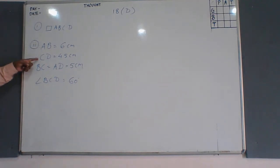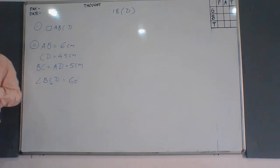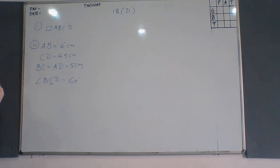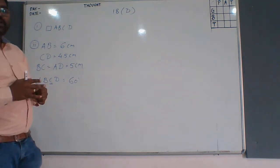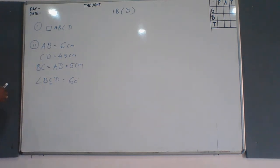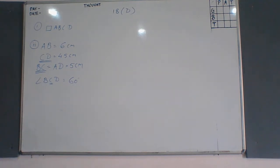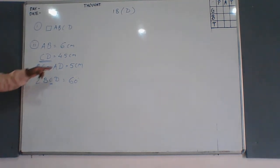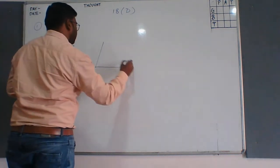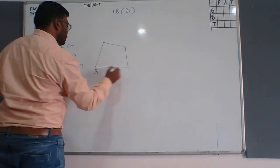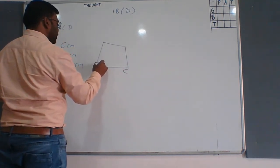Observe the given information: angle C is given as 60 degrees. We will select a segment that includes angle C as the base. Angle C is included in CD and in BC. Since BC is greater than CD, we give preference to the greater side and select BC as the base.